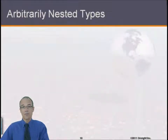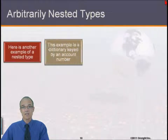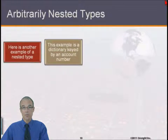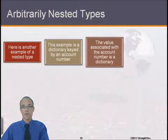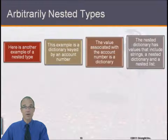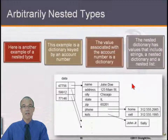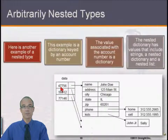Let's look at another example. This example will create a nested type — first of all a dictionary, keyed by an account number. The keys of the dictionary will be some account number, and the value associated with the account number is itself a dictionary. So this will be a dictionary of dictionaries, and that dictionary has values that include strings, a nested dictionary, and a list. Here's our outer dictionary called data, indexed by a record number, some sort of account number.